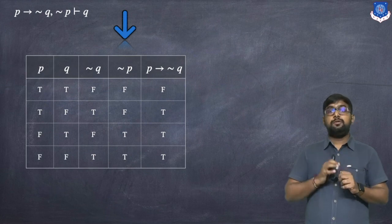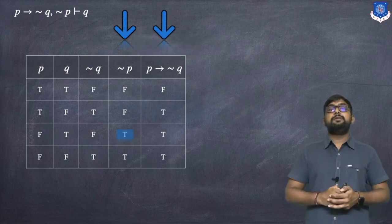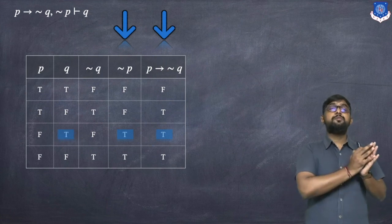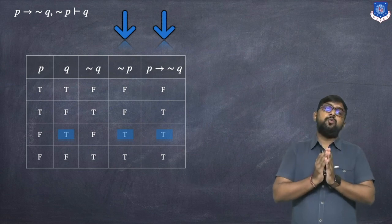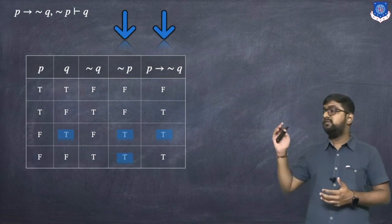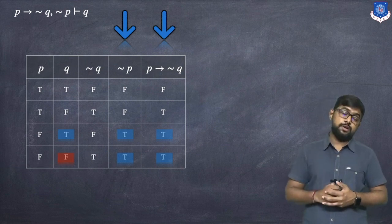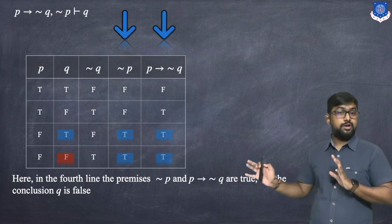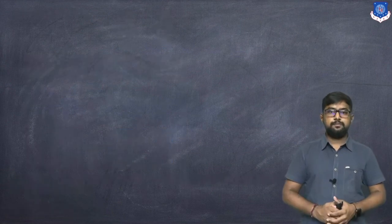We now check rows where all premises are true. The premises are ¬p and (p → ¬q). In the fourth row, both premises ¬p and (p → ¬q) are true, but the corresponding conclusion Q is false. Since there exists a row where all premises are true but the conclusion is false, the argument is not valid — hence it is a fallacy.